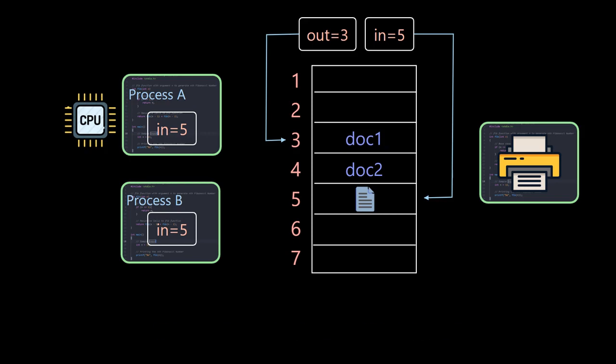Of course, process A also needs to add 1 to the variable in where the record is added, and modify the global variable in.